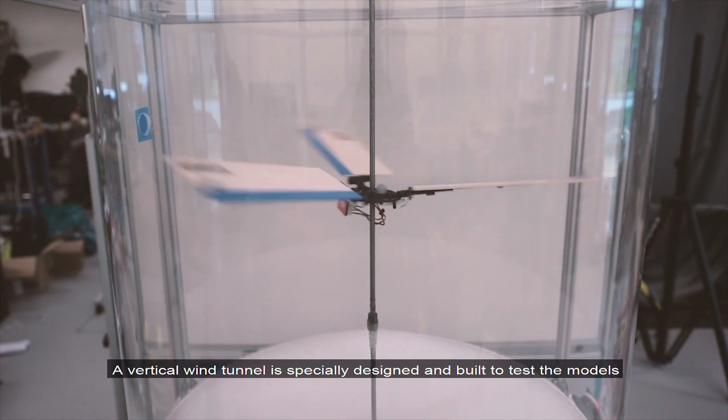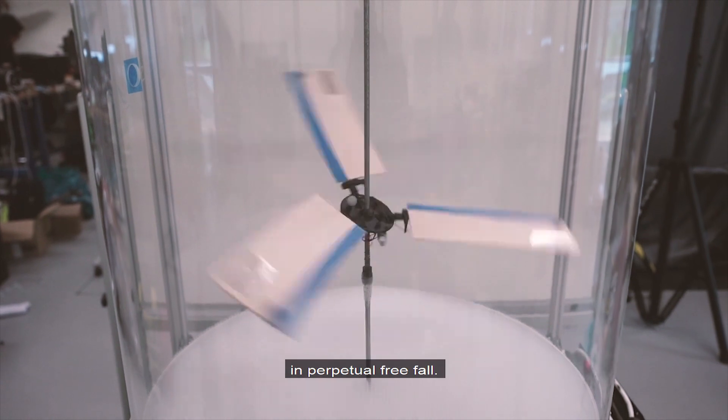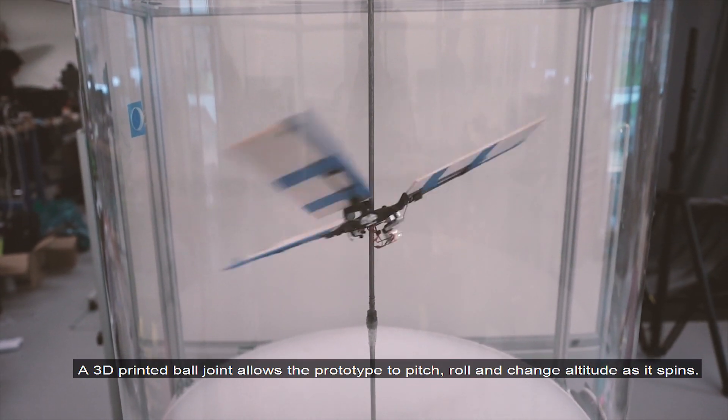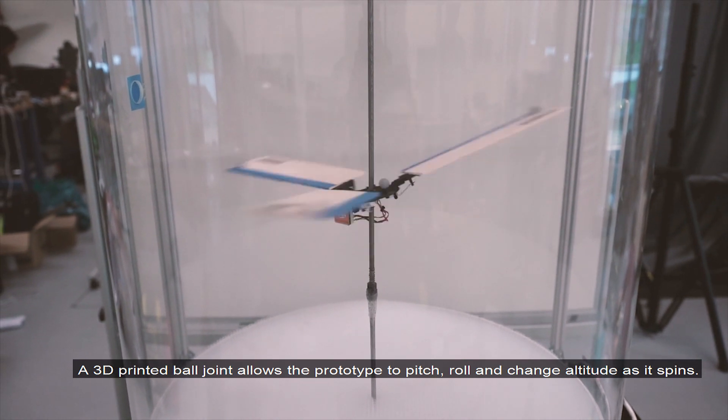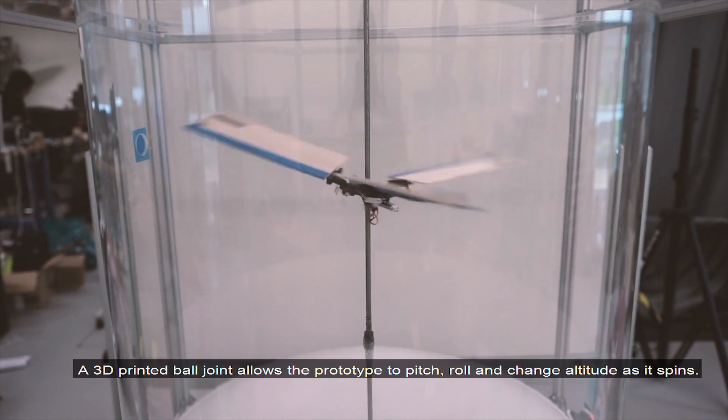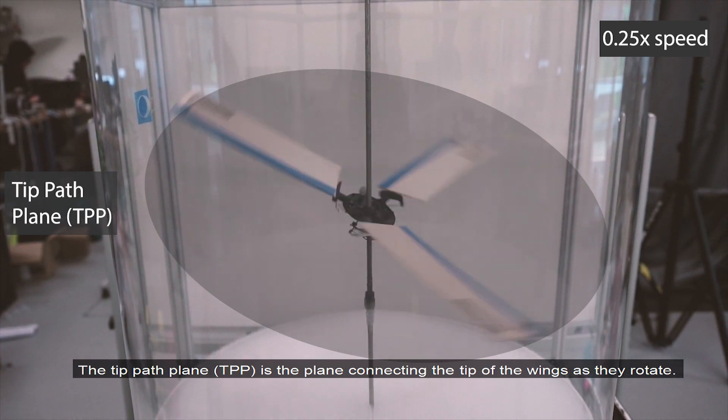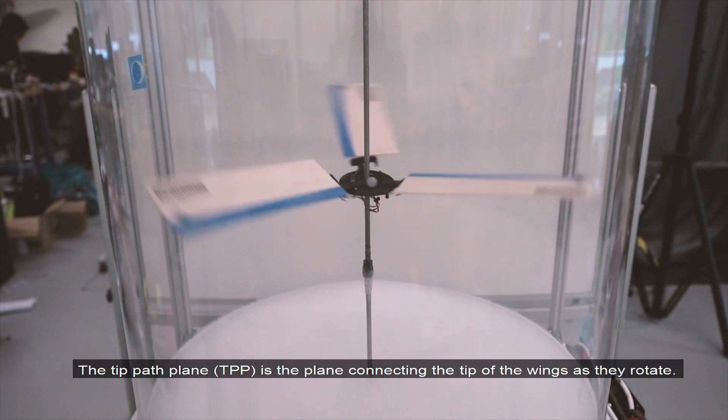A vertical wind tunnel is specially designed and built to test the models in perpetual freefall. A 3D printed ball joint allows the prototype to pitch, roll and change altitude as it spins. The tip path plane, TPP, is the plane connecting the tip of the wings as they rotate.